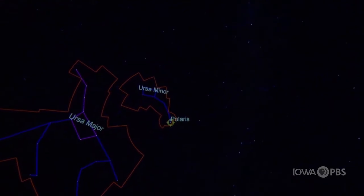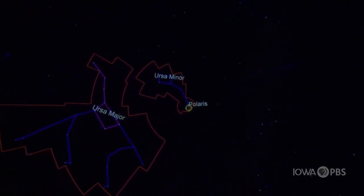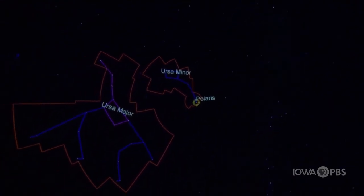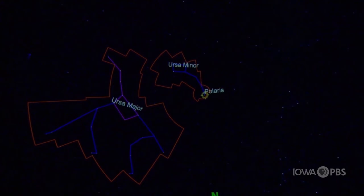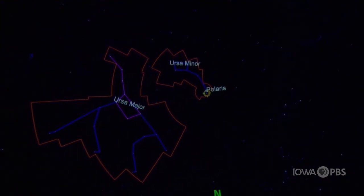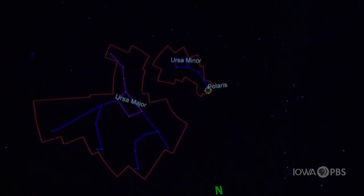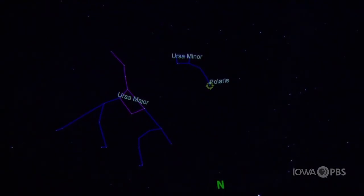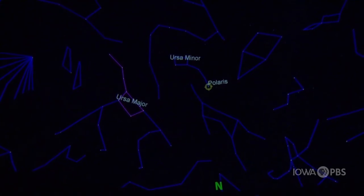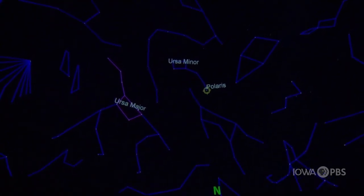Now where did all these asterisms come from in the first place? As we saw earlier, the Big Dipper could be used to find Polaris and help find out our different directions. Mapping the night sky is almost like creating a map, because night after night the constellations appear pretty much in the exact same spot.